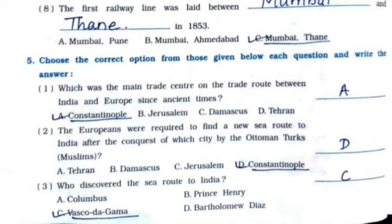Now question number five: Choose the correct option. First: What was the main trade center on the trade route between India and Europe since ancient times? — Option A, Constantinople. Second: The Europeans were required to find a new sea route to India after the conquest of which city by the Ottoman Turks? — Option D, Constantinople. Third: Who discovered the sea route to India? — Option C, Vasco da Gama.